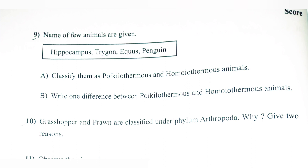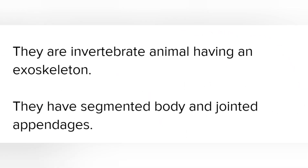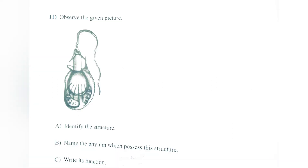Question 10: Drosophila and Prawn are classified under Phylum Arthropoda. Why? Give reason. Answer: They are invertebrate animals having an exoskeleton. They have a segmented body and jointed appendages.